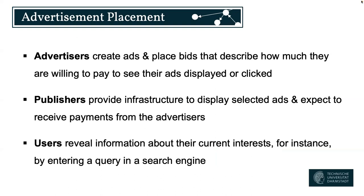Let's talk about advertisement placement. In advertising placement — what big companies like Google with a search engine, or platforms like YouTube do — you have advertisers, or sponsors, who create ads and place bids describing how much they are willing to pay to see the ads displayed or clicked by consumers. Then there are publishers, who provide the infrastructure to display selected ads and expect payments from advertisers. And then there are users, who interact with the infrastructure and reveal information about their current interests, for example by typing keywords in a search engine.